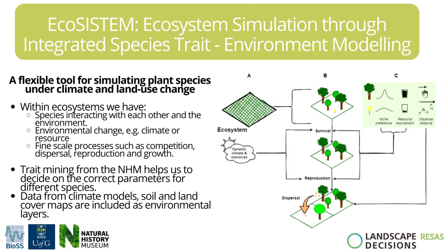The second is a biodiversity digital twin, and in particular this one is called EcoSystem. It is a tool developed particularly for simulating plant biodiversity. We simulate the plants interacting with each other and their environments across space, and how they might respond to changes in climate. We thought this would be a useful exemplar for the FAIR data pipeline, which up until now has really focused on epidemiological models, and could serve as an example for environmental modelling and data.